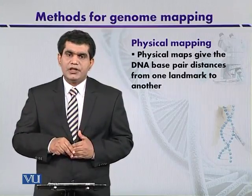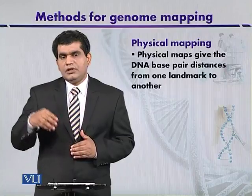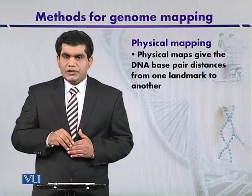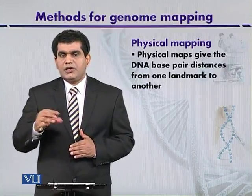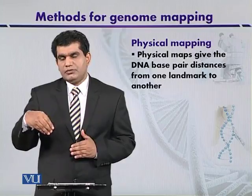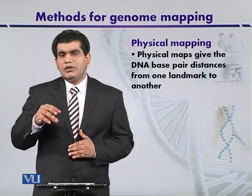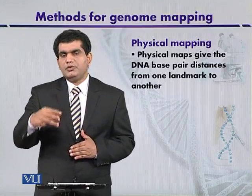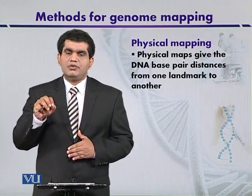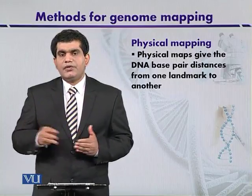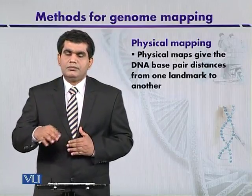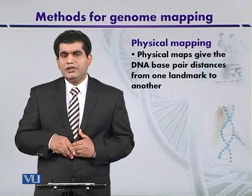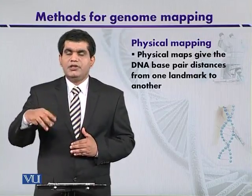Another reason is that genetic linkage maps were based on studying traits, and genes were not directly considered. In modern maps like physical maps, traits are characterized in terms of genes, which helps to designate the position of particular genes.